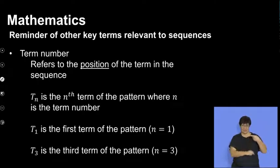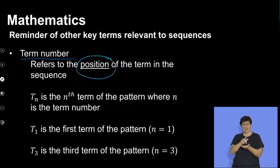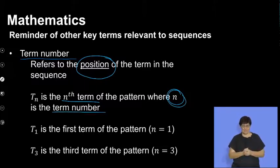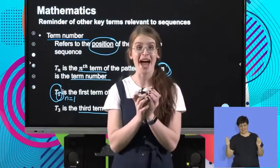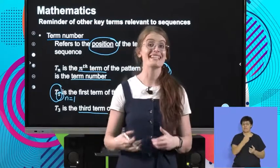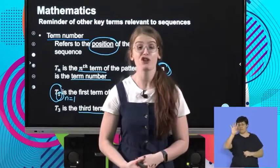The first one I'm going to talk to you about is a term number. Please remember that refers to the position of the term in the sequence. TN is the nth term of the pattern, where n is the term number. If I have T1, and we can see over here that n is equal to 1, this is the first term of the pattern. T3 will be the third term of the pattern. So the term number is indicating the position the term has within the pattern. If I say T7, that is the seventh term in the pattern.